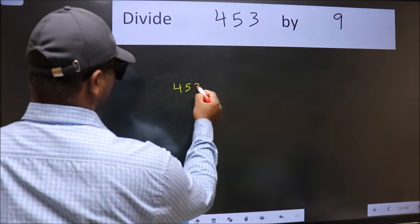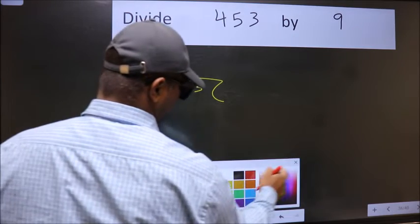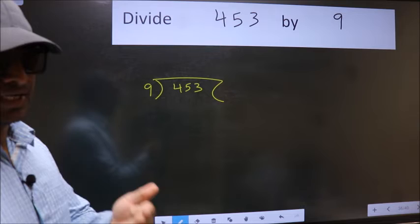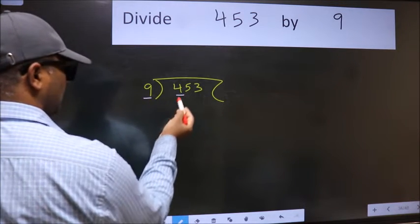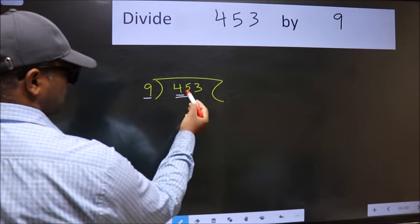453 here, 9 here. This is step 1. Next, here we have 4 and here 9. 4 is smaller than 9, so take two numbers: 45.